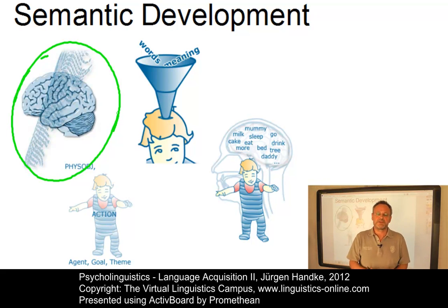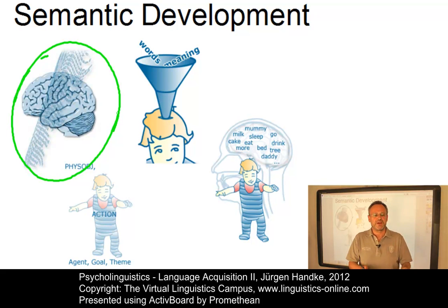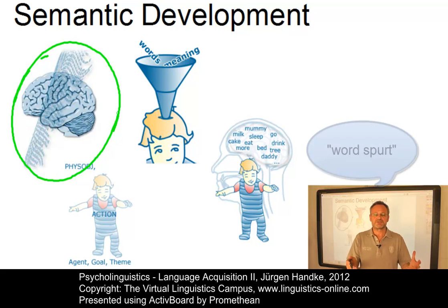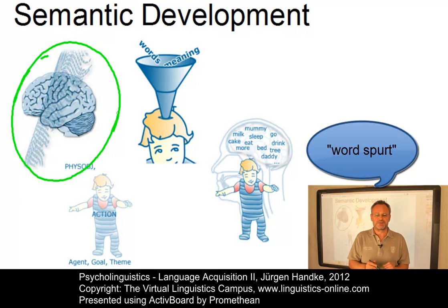Children utter their first recognizable word at around the age of one. The time course of word learning is commonly assumed to involve a vocabulary burst or word spurt roughly six months later.